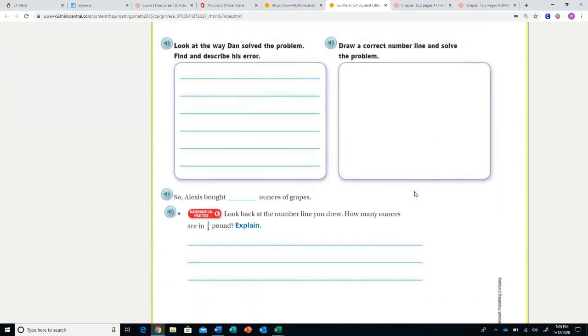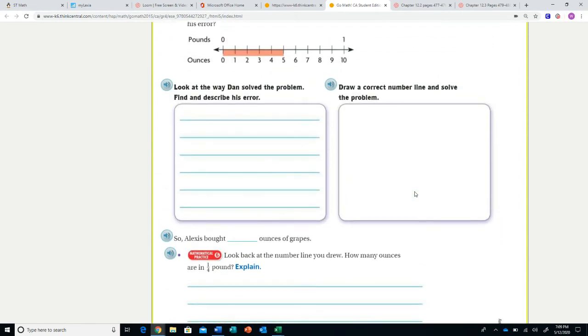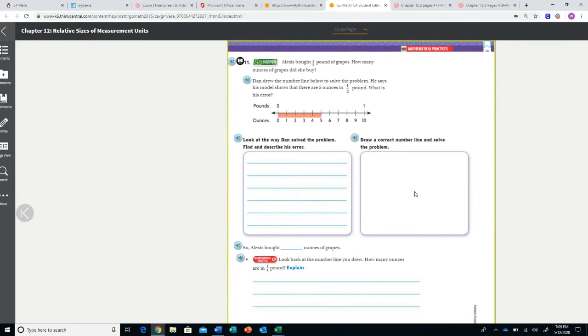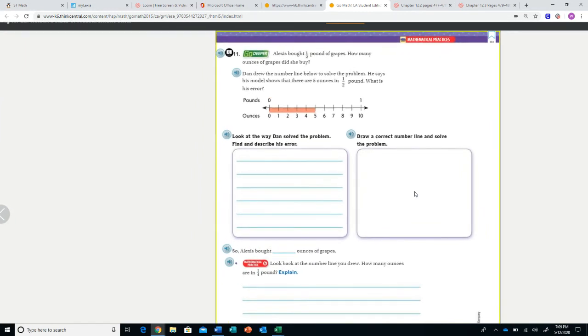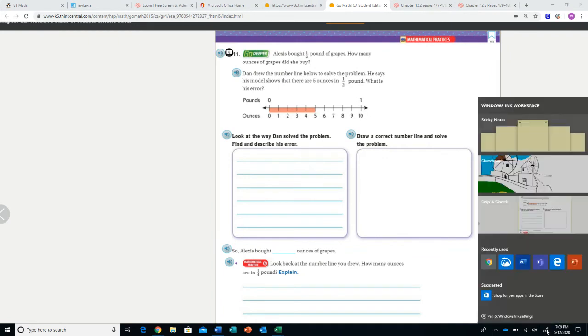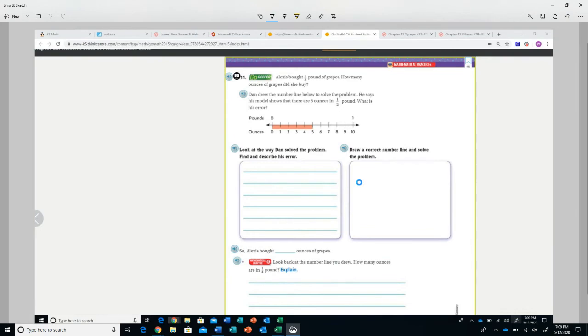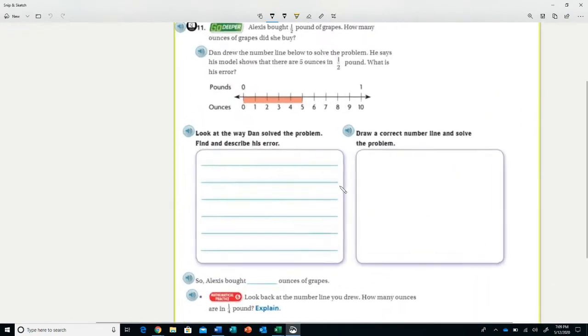You have pounds on the top, ounces on the bottom. Look at the way Dan solved the problem. Find and describe his error. Draw a correct number line and solve the problem. So I hope you're already looking at his number line.